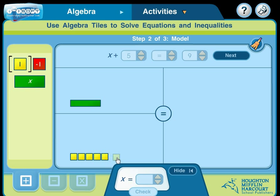1, 2, 3, 4, 5. And then over here, let's put the 9. 1, 2, 3, 4, 5, 6, 7, 8, 9.